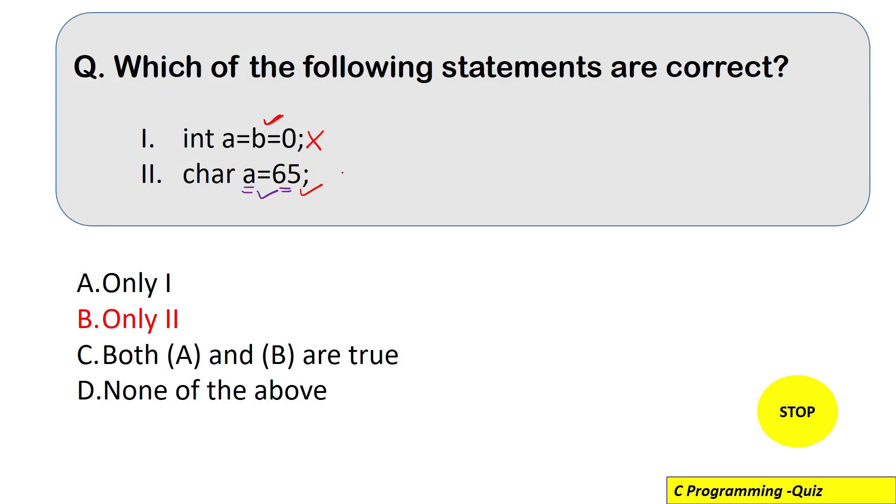So it is because this character a variable is here and 65 is getting stored inside a. Now as we said a can store a character variable. So actually inside this a your 65 will be stored and if you want to print using the percent C then the corresponding character with this 65 will be printed.